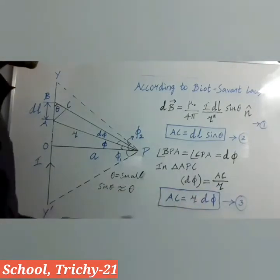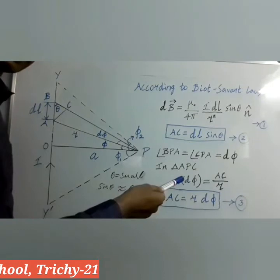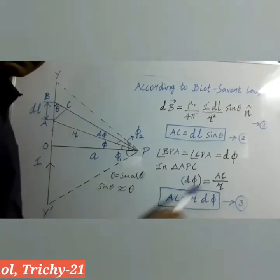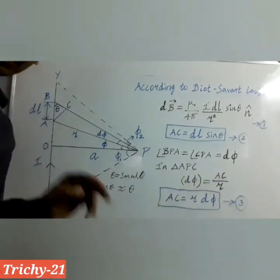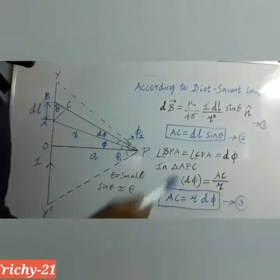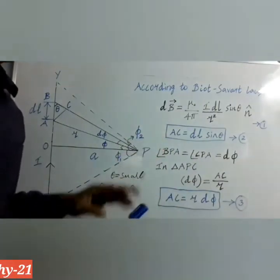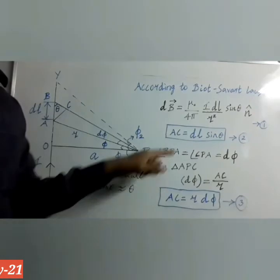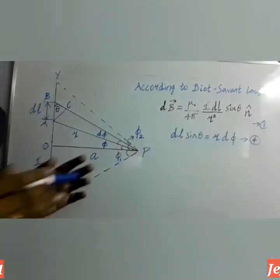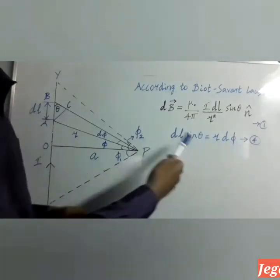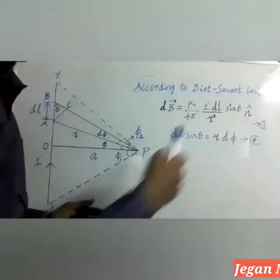Rearranging to get the value of AC — R is taken to the left side — so AC is equal to R·dΦ. That is the third equation. Now we have two equations and we can compare equation 2 with equation 3. Both left-hand sides are equal, so the right-hand sides are also equal. By comparing equations 2 and 3: DL sinθ is equal to R·dΦ. That is the fourth equation.